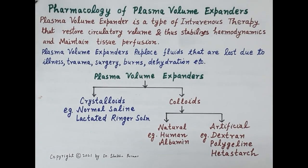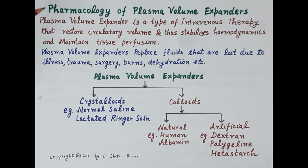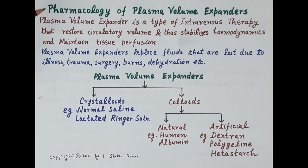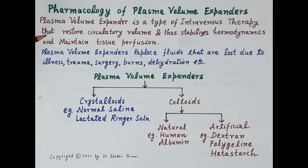Today we are going to discuss pharmacology of plasma volume expanders. Plasma volume expanders are agents that replace body fluids lost from the body, for example during accidents, surgery, and trauma. Since these agents re-establish lost plasma volume, they are termed plasma volume expanders. This is a type of intravenous therapy where intravenous fluids are administered to restore the circulatory volume and stabilize hemodynamics — that is, stabilize the circulation of blood in the body.